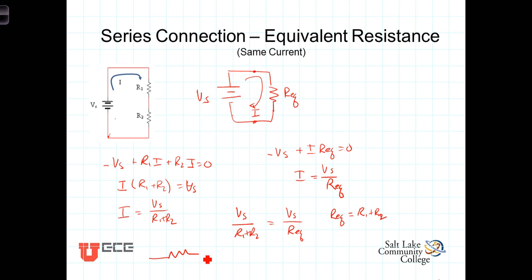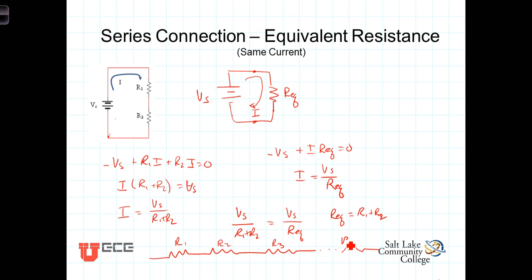In fact, a similar analysis would show us that if we had N resistors in series — R1, R2, R3, ... Rn — the equivalent resistance would simply be the sum of all those resistors.